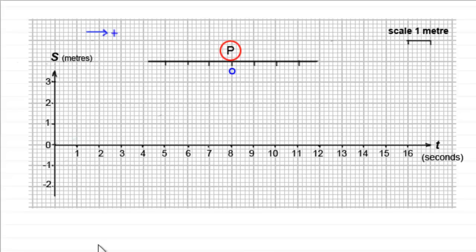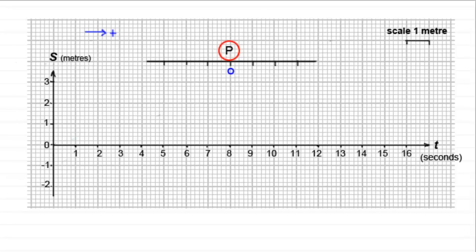Now what I want to do is show you how we can draw displacement time graphs. We always have displacement on the vertical axis, and here I've got it measured in metres, and we always have time on the horizontal axis, and I've got it measured in seconds. So, if we had this graph, what I want to do is show you how P moves in relation to it.